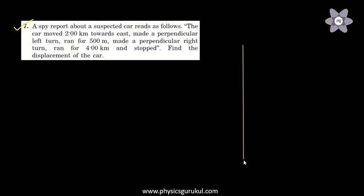The question here describes the car's path. First of all, the car moves 2 km to east. This is west, this is north, and this is south. So first of all, 2 km towards east.